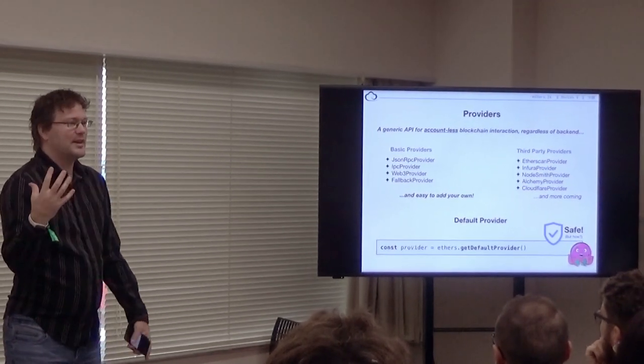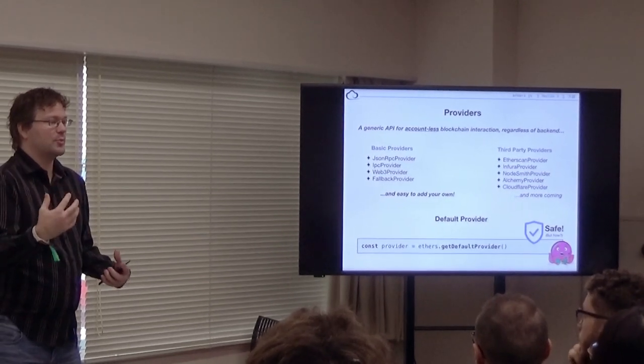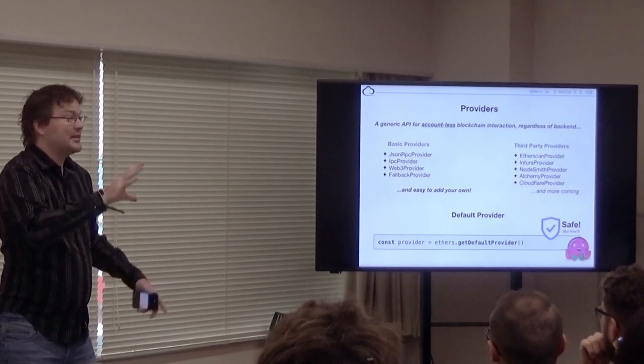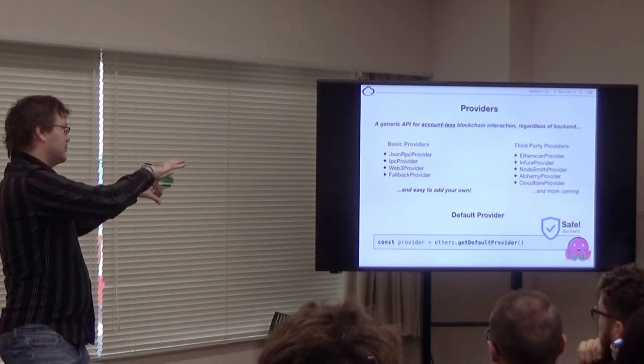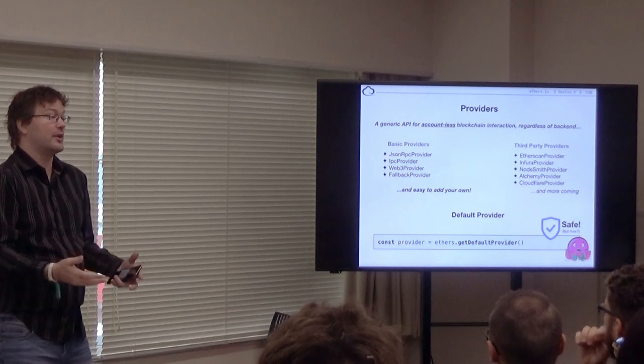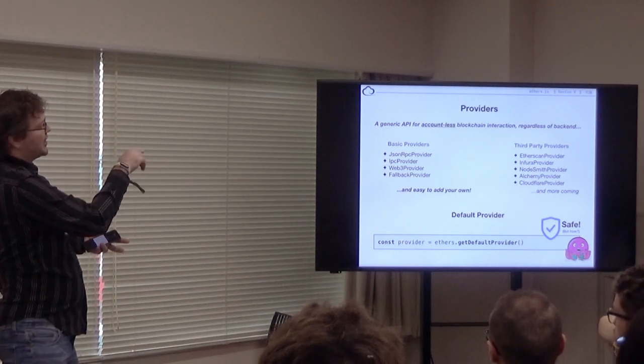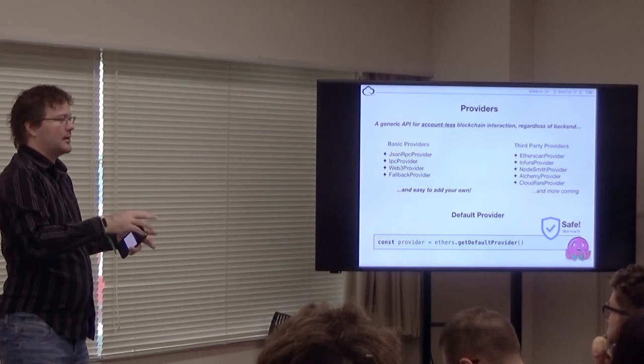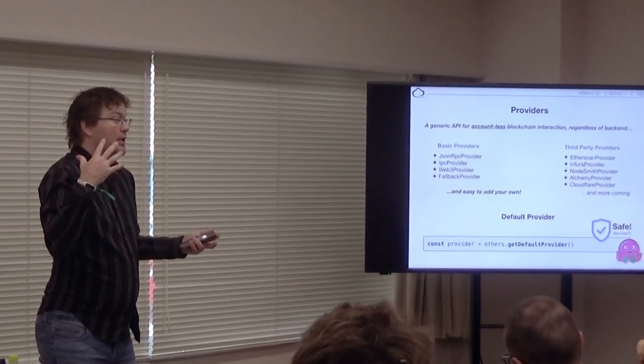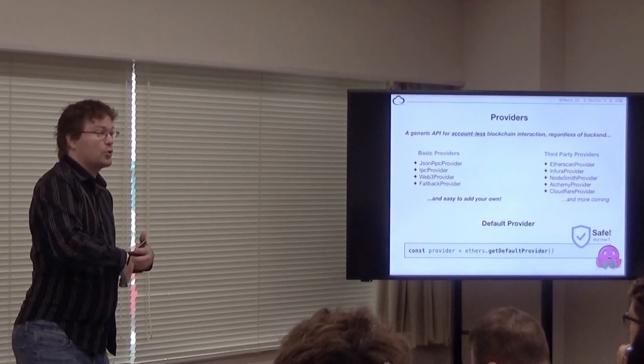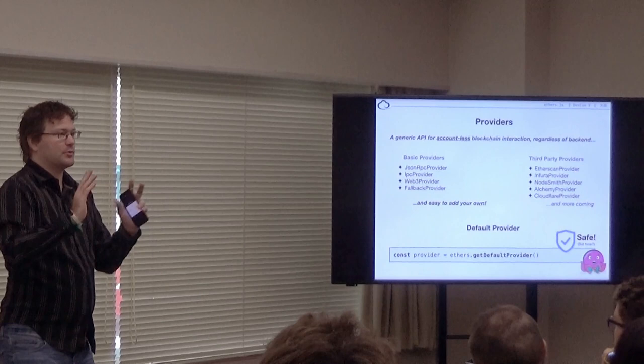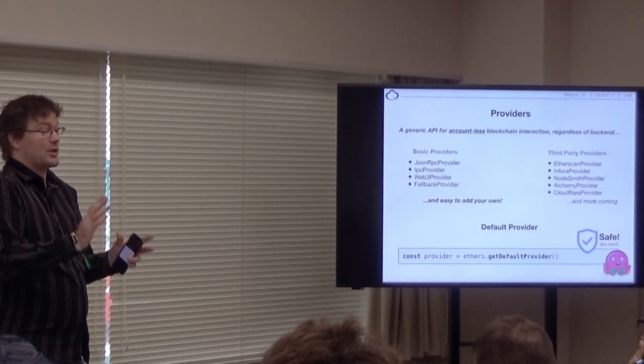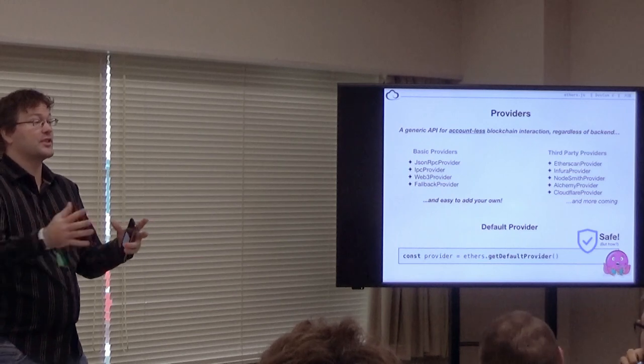So yes, the default provider. Basically, this is the type of provider I'd like to see more promoted as well. The idea of default provider is, it's an instance of a fallback provider. If you create the default provider for Homestead, it'll be backed by Etherscan, Infura, Cloudflare, Nodesmith, Alchemy. And it will actually keep a connection to all five of these. When you make a request for the current block number, it will query two of them at random. When it gets the response, if they both say block one million, you're good to go. If there's a discrepancy between them, it'll query the third and then the fourth until there's a consensus across the backends.